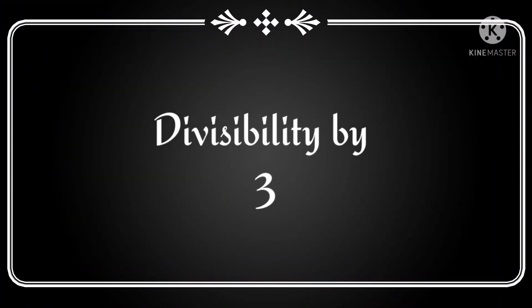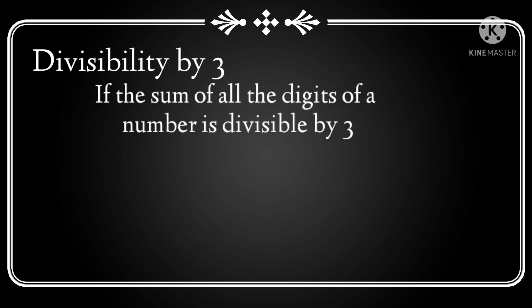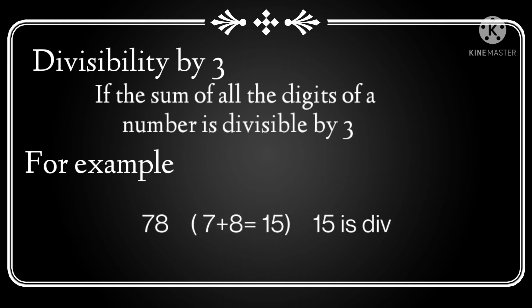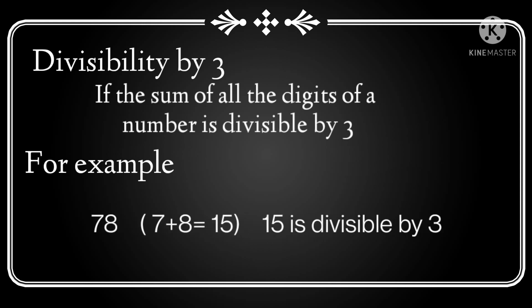Now let's discuss divisibility by 3. The rule is: if the sum of all the digits of a number is divisible by 3, then the number is divisible by 3. For example, suppose we have the number 78. We add its digits: 7 plus 8, which equals 15. And since 15 is divisible by 3, we can say that 78 is also divisible by 3.